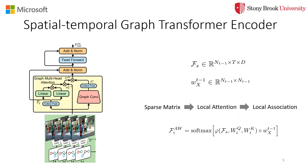TransMOT consists of the spatial-temporal graph transformer encoder and the spatial graph transformer decoder. The encoder takes the graph series as input. Leveraging the graph formulation, the global association can be decoupled as multiple local associations. The encoder therefore can use graph convolution to effectively model the local attention for better capturing the spatial-temporal clues among the tracked targets.